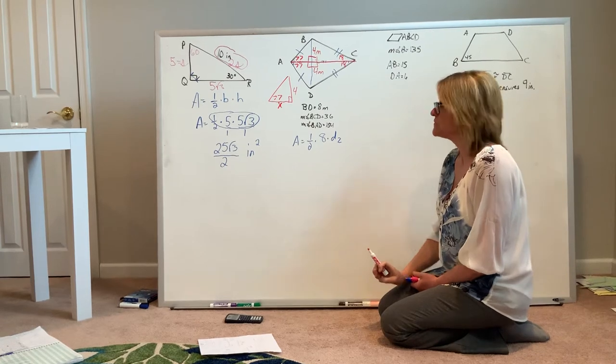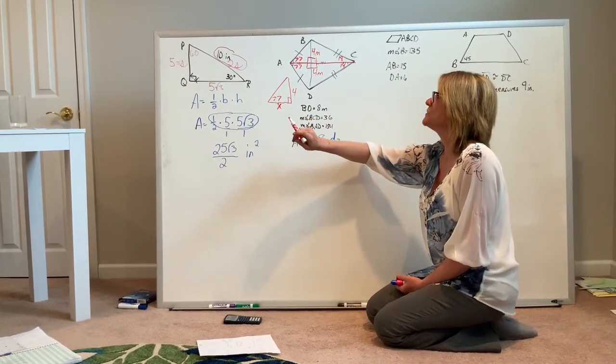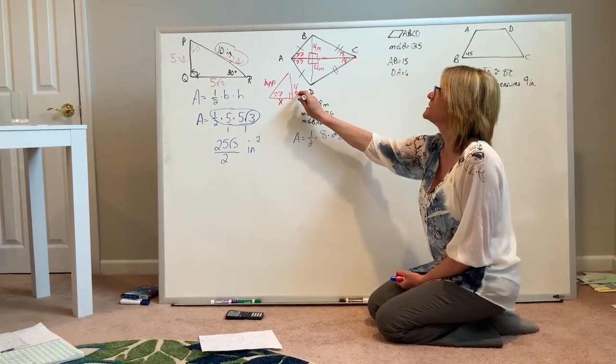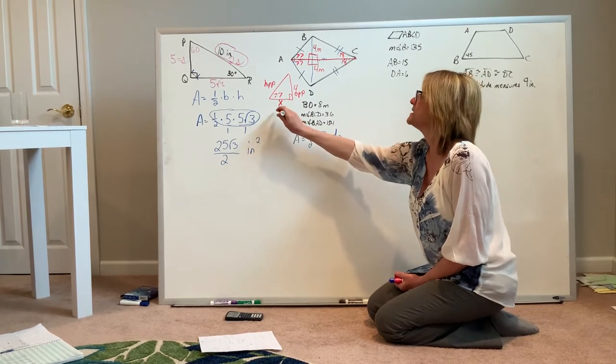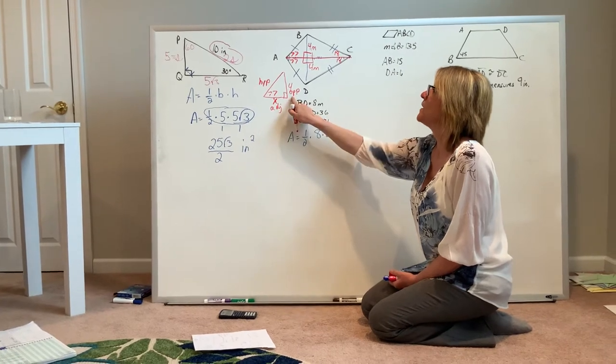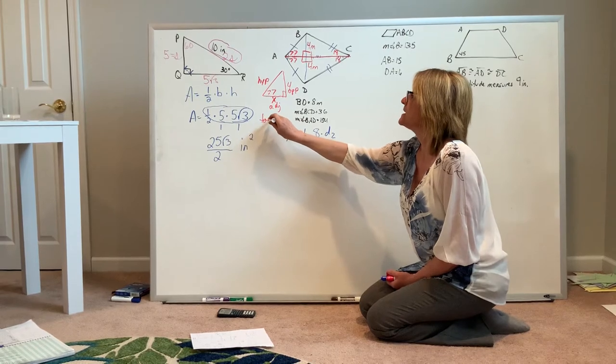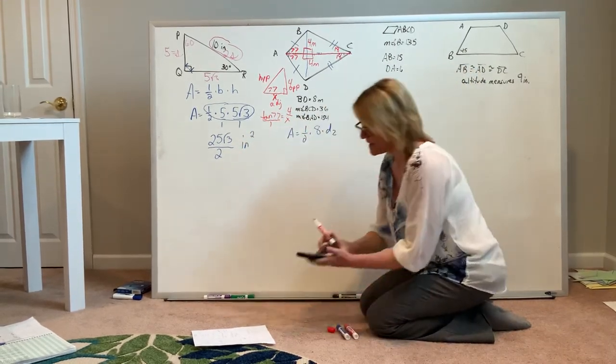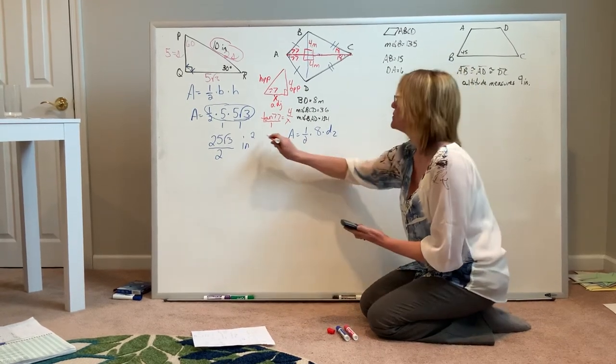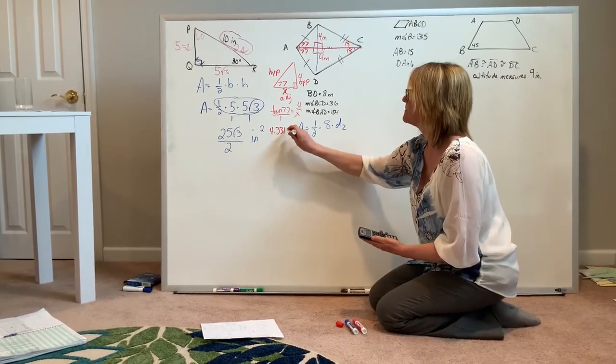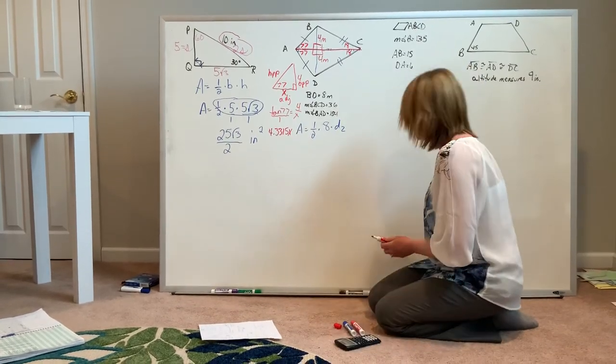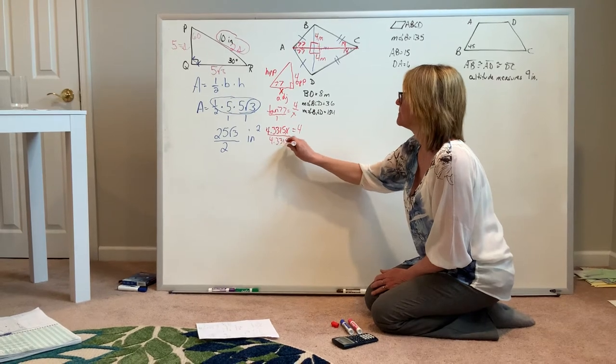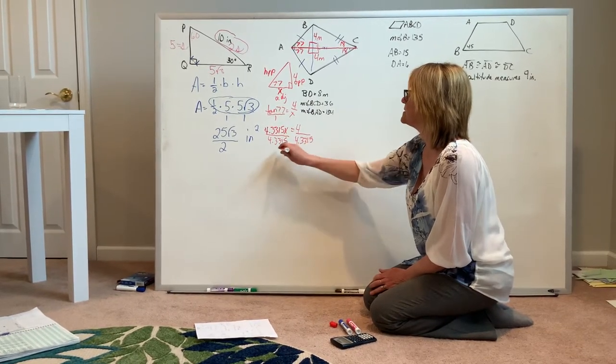77 isn't an angle measure that has any special formulas related to it, so we're going to set up an equation using SOHCAHTOA. The side that I don't know and don't really need is the hypotenuse. Across from the 77 degree angle is my leg that's opposite, that has a length of 4, and the leg that's a piece of my diagonal is adjacent to the 77. OA means that I need to use tangent. The tangent of 77 is equal to 4.3315. To find x, I divide to get a segment length of 0.9.